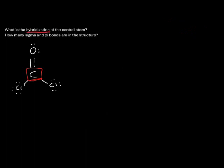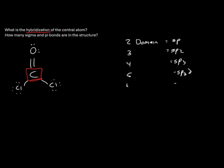You may also be asked for the hybridization on the central atom, which depends on the number of domains. Two domains is sp, three domains is sp2, four domains is sp3, five domains is sp3d, and six domains is sp3d2. We'll go deeper into this topic in a later video. For now, because we had three domains, the hybridization for this molecule is sp2 with respect to the central atom.